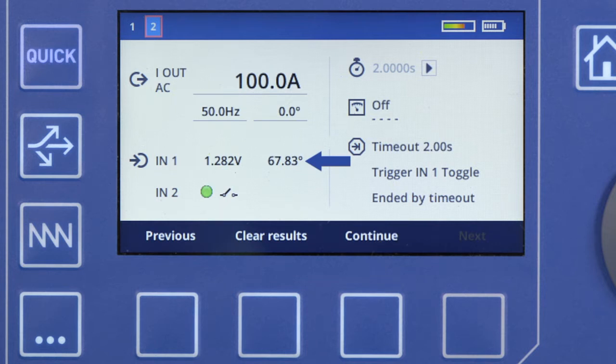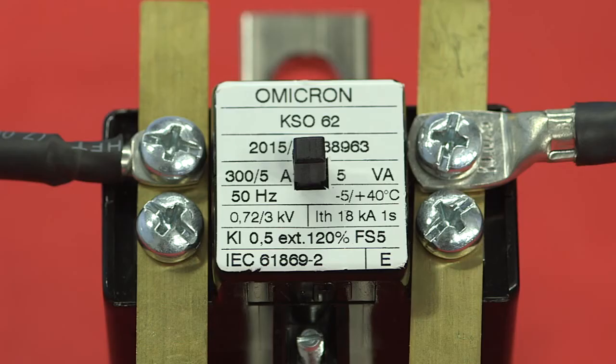If it was between minus 90 degrees and minus 180 degrees, then the polarity would be reversed. Next, we are going to test the CT's ratio.